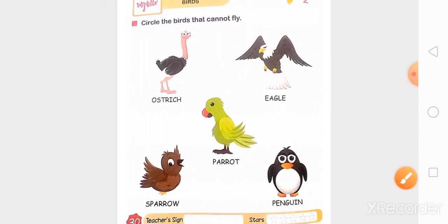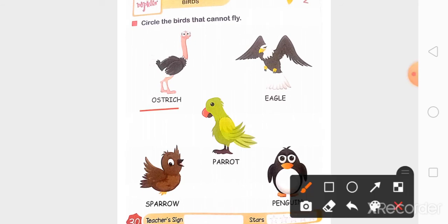तो यहां पे आपको कौन कौन से bird दीख रहे हैं बचो? Ostrich, Eagle, Parrot, Sparrow and Penguin. तो इस में से कौन नहीं उड़ सकता है? उसको हमको circle बनाना है.